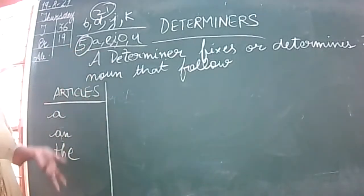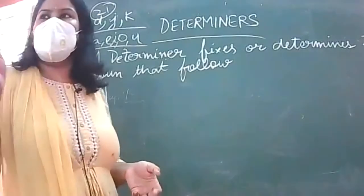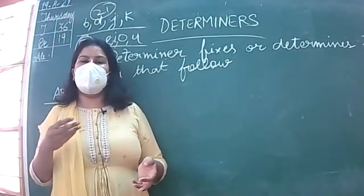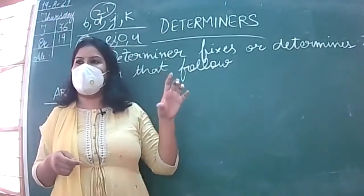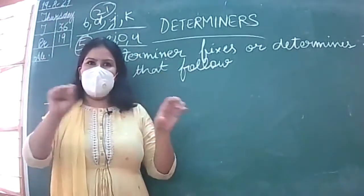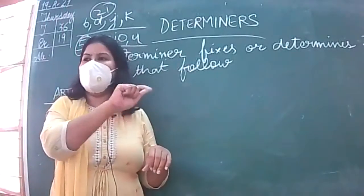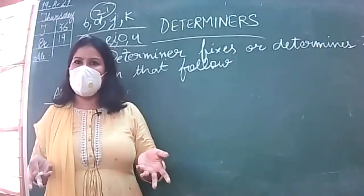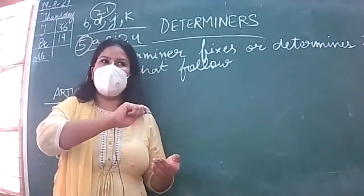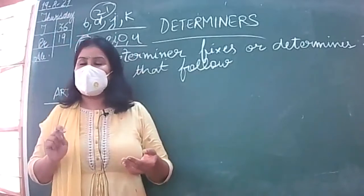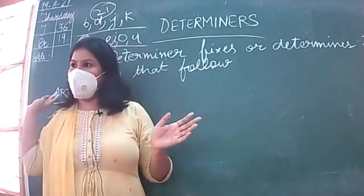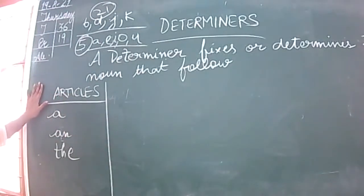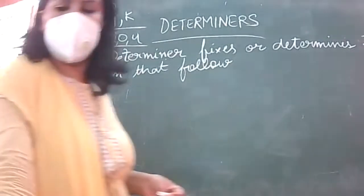You might be thinking why we are doing determiners. In gap filling or editing, you get six, eight, or five marks. In those questions, lines are given and you underline the wrong word — for example, you underline 'a' and write 'the' in front of it. Those are determiners only. So everything we are going to do relates to determiners.